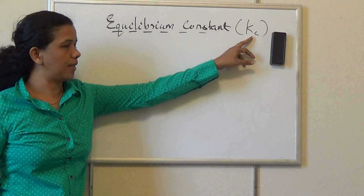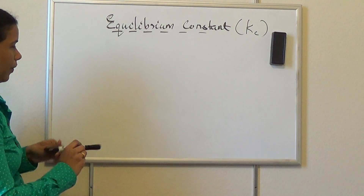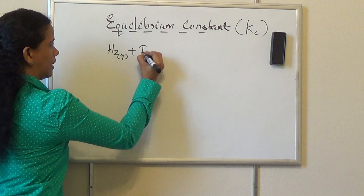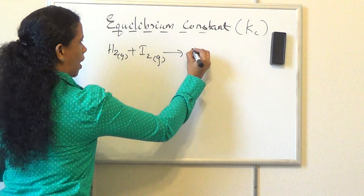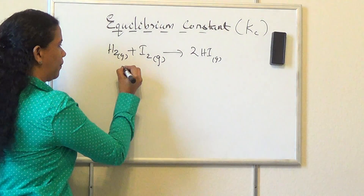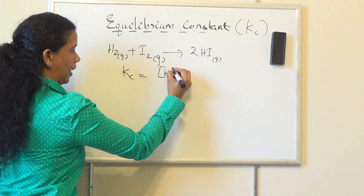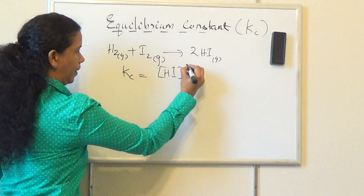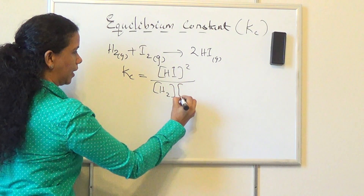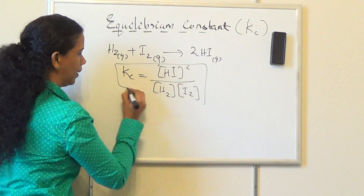The equilibrium constant in terms of concentration is called Kc. For the reaction where hydrogen gas combines with iodine gas to give hydrogen iodide, Kc equals the concentration of HI squared divided by the concentration of H2 times the concentration of I2. This is the Kc for that reaction.